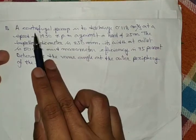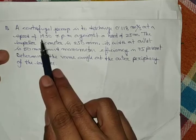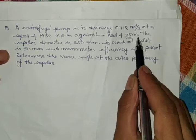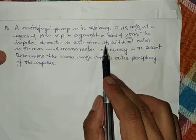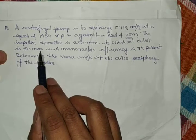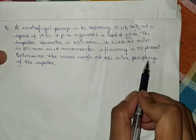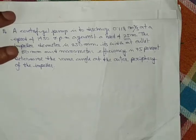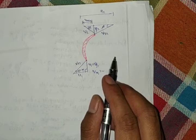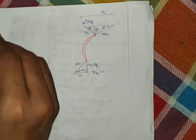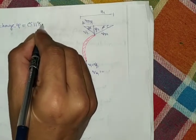Now let's try another problem. A centrifugal pump is to discharge 0.118 m³/s at a speed of 1450 rpm against a head of 25 m. The impeller diameter is 250 mm, width at the outlet is 50 mm, and manometric efficiency is 75%. Determine the vane angle at the outer periphery of the impeller.